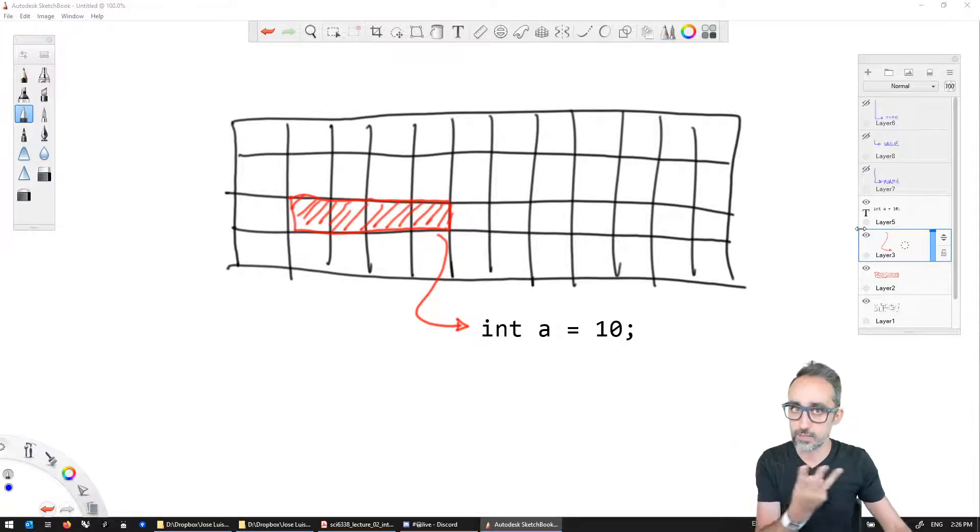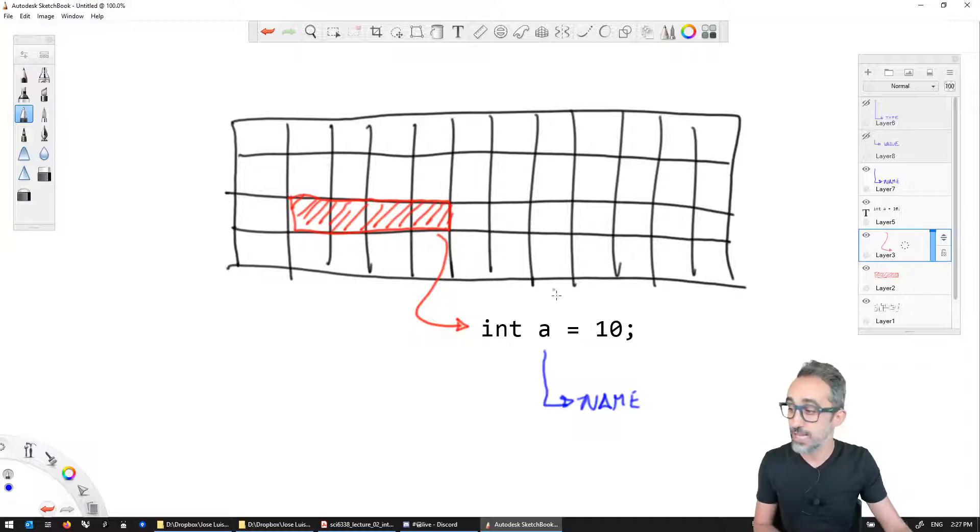We do it with a statement like the one I have written here. This statement has three main parts. First, it has the name of the variable. This 'A' that I'm writing here is the name of the variable I have declared. From here on during the life of the program, this slot of memory is going to be called A, which is a terrible name, by the way.